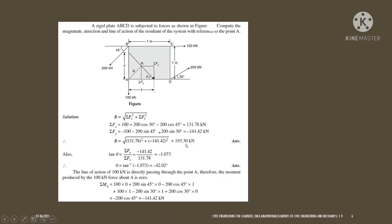The magnitude of the resultant is found. The direction theta is calculated as tan⁻¹(ΣFy / ΣFx) = tan⁻¹(141.42 / 131.78), giving tan⁻¹(1.073), which equals minus 42.02 degrees. Next, let us find the line of action — the x-intercept and y-intercept of the resultant from point A.